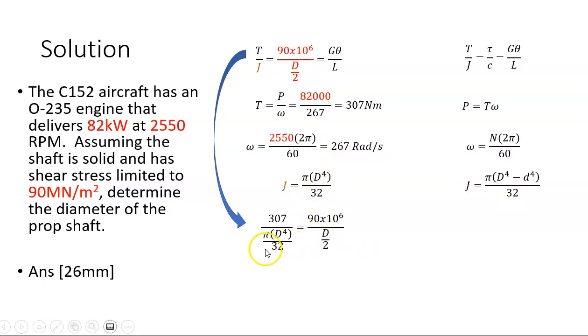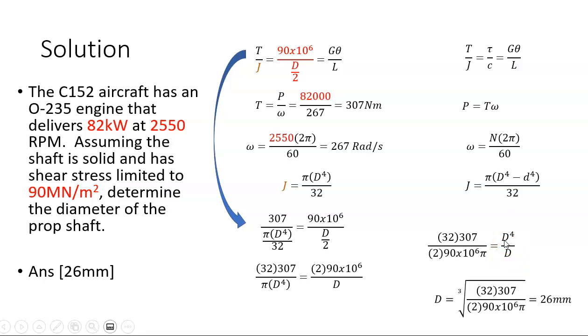What I'm going to do first to get rid of these fractions. I'm going to multiply above and below the line here by 32 and above and below the line here by 2. I'm now going to bring the d to the power of 4 up here and bring the 90 by 10 to the 6 down here, just cross multiplication. That then becomes d cubed. So if I want to get a d value, I get the cubed root of this expression here. I'm going to put that into the calculator.